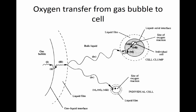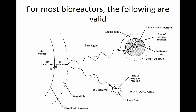You can see the different barriers to overcome, and some are more significant than others. Starting from the gas bubble itself, transfer of oxygen through the bulk gas phase in the bubble to the surface is relatively fast because it's just gas moving through gas.